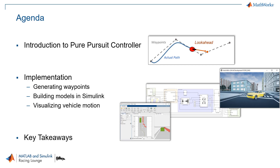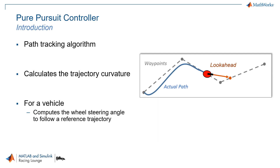The Pure Pursuit controller is a path tracking algorithm where we place a waypoint or a reference point on a path at a fixed distance ahead, which is also called the lookahead distance of the vehicle, and calculate the steering command to intersect with this point.